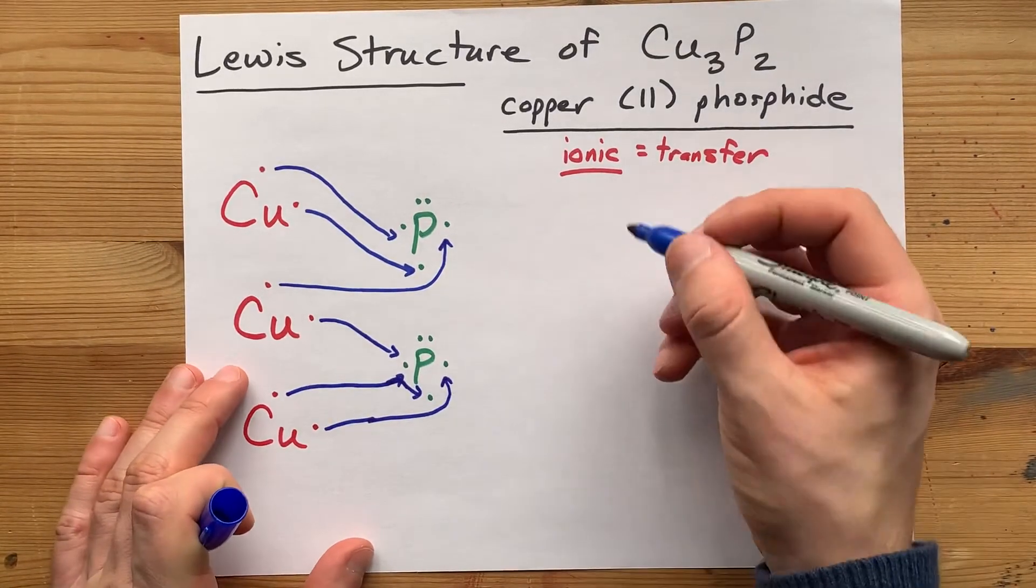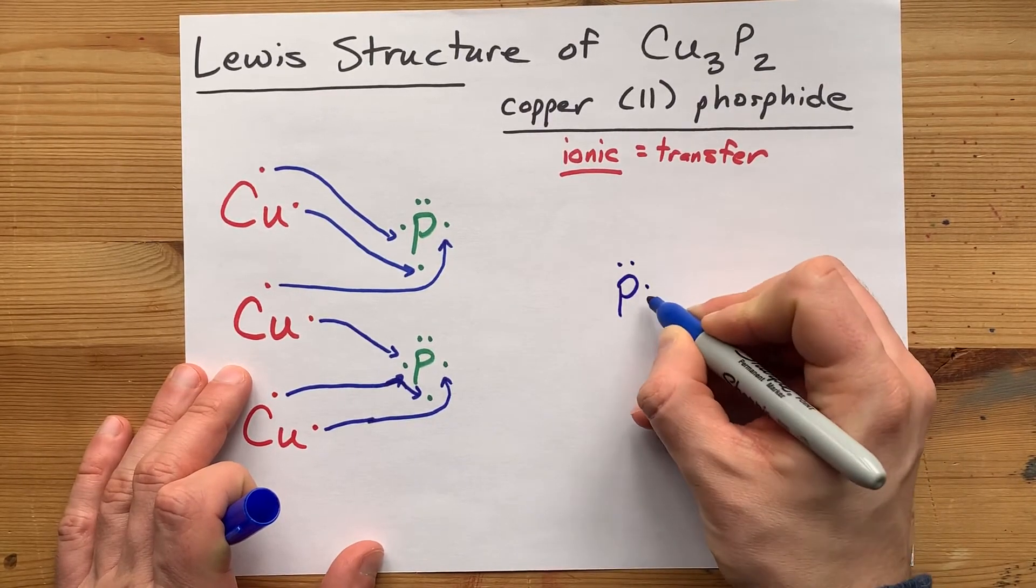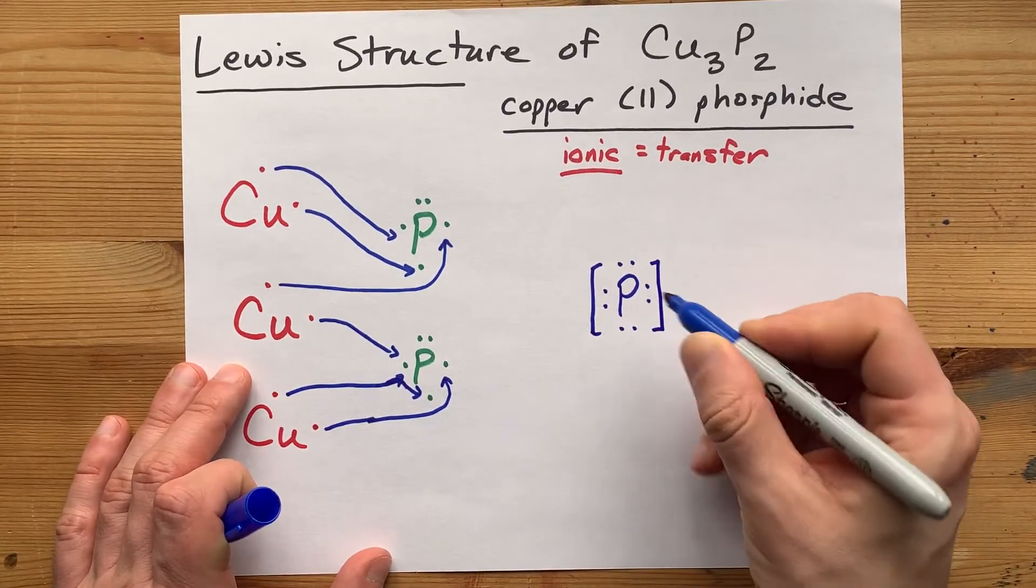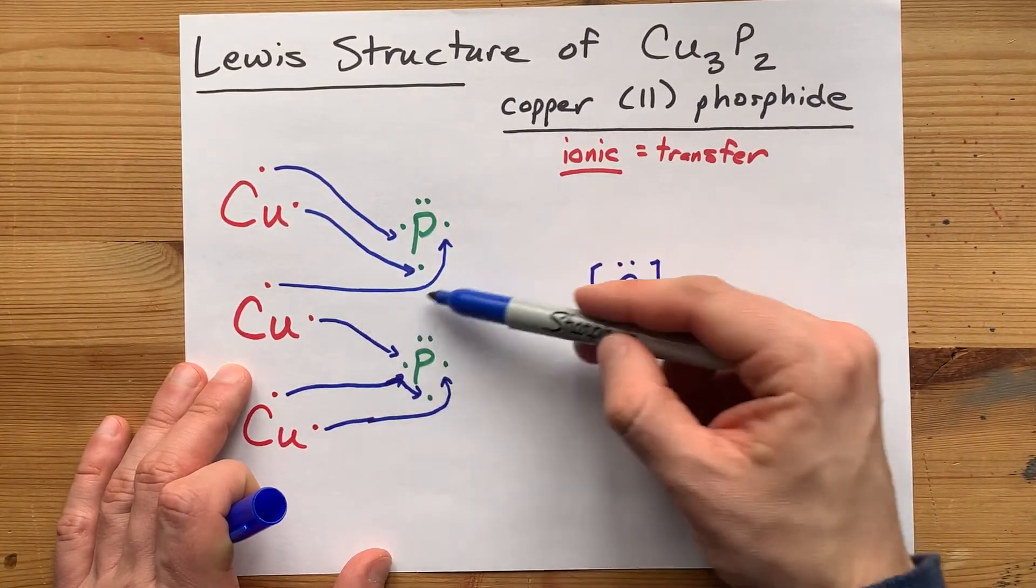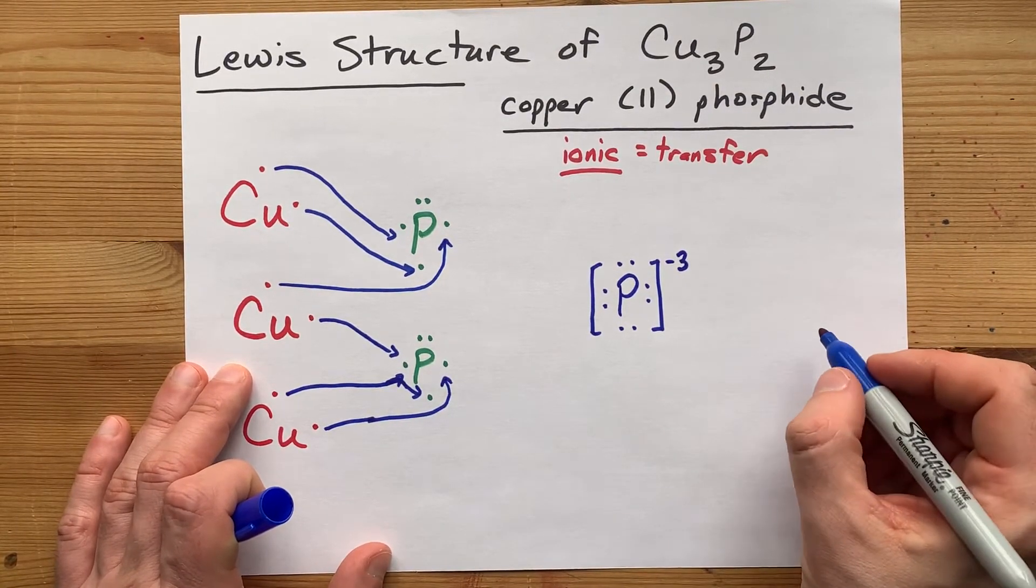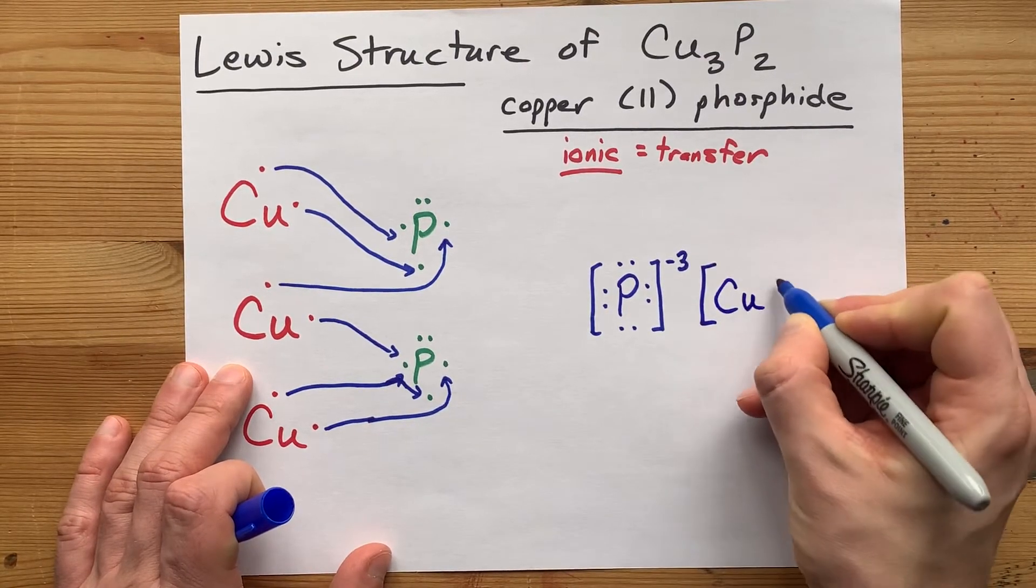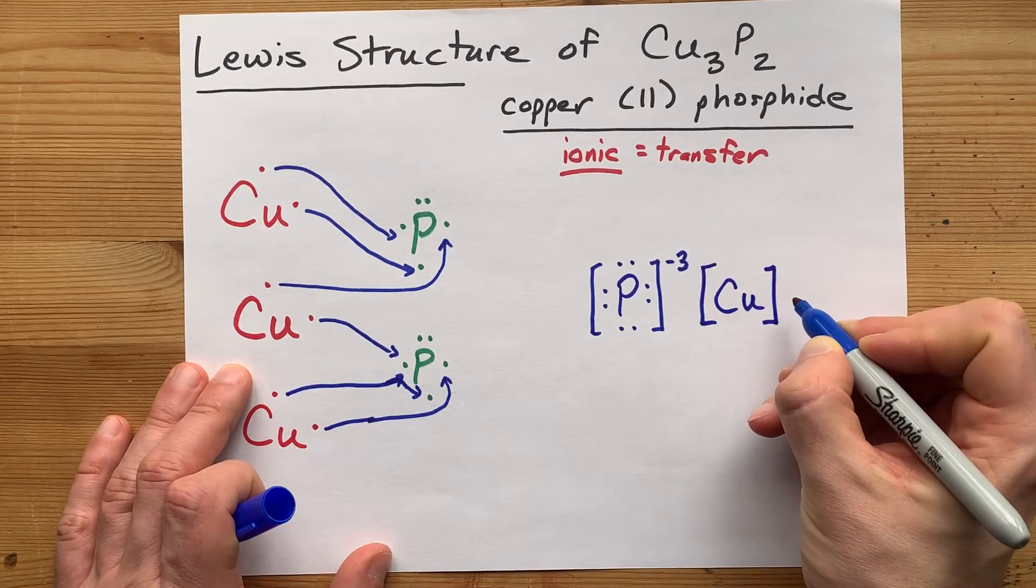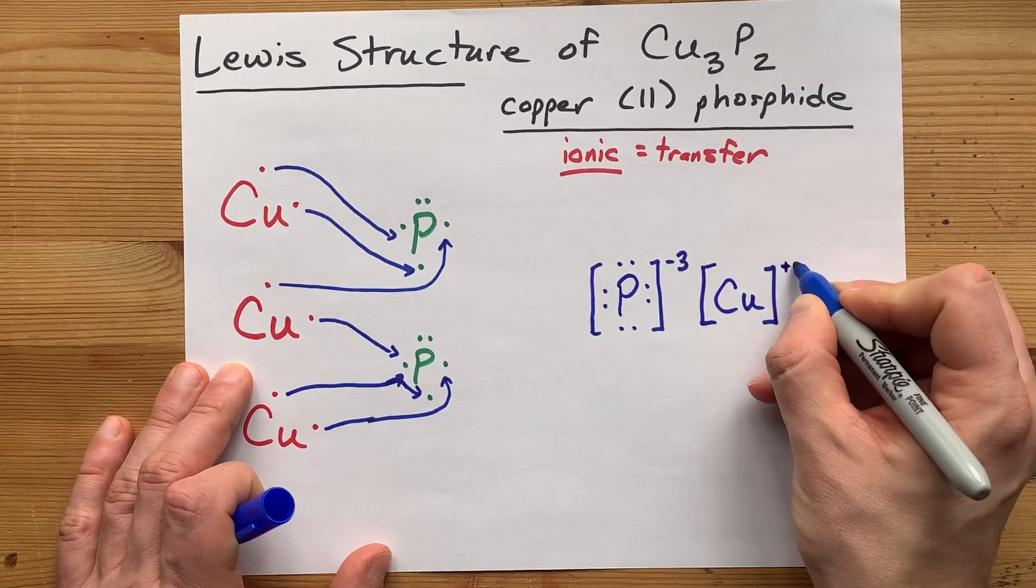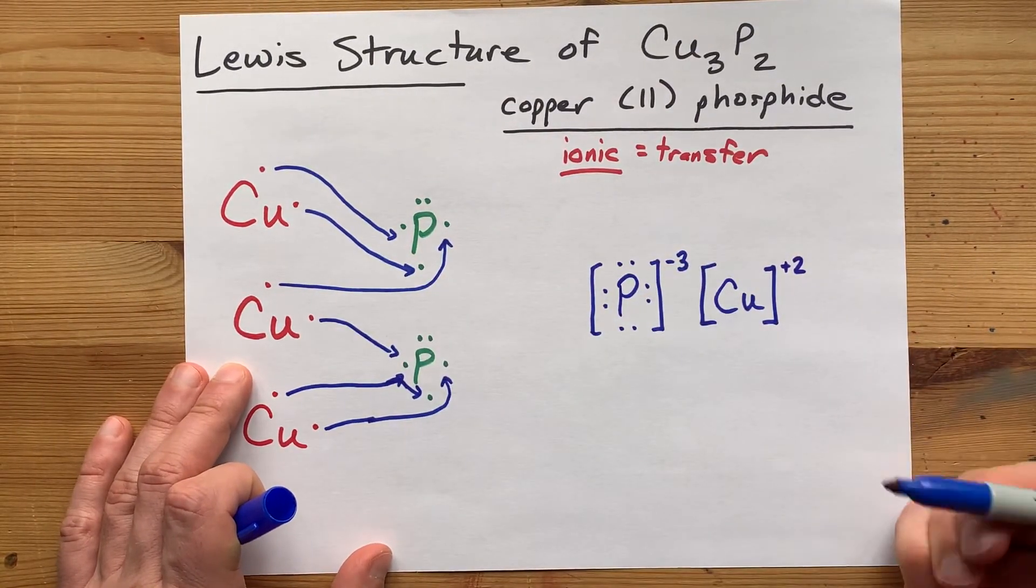To draw the final Lewis structure here, give yourself the phosphorus with eight electrons around it. I know it brought five, but it took three from various coppers. Three extra electrons, give it a minus three charge. Give yourself some coppers. Those coppers had two electrons to start with but gave them away, so don't draw any. And that is now a positive two charge, because minusing two negatives gives you a positive.